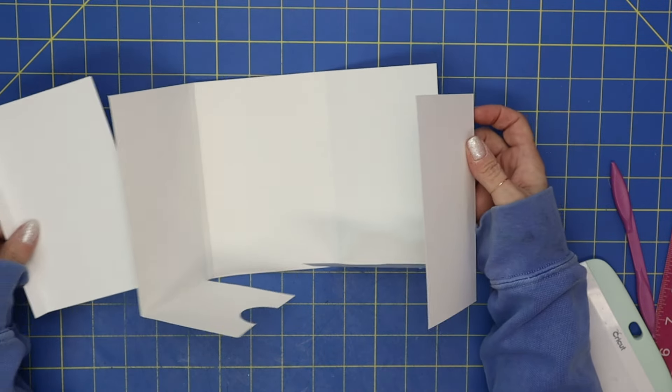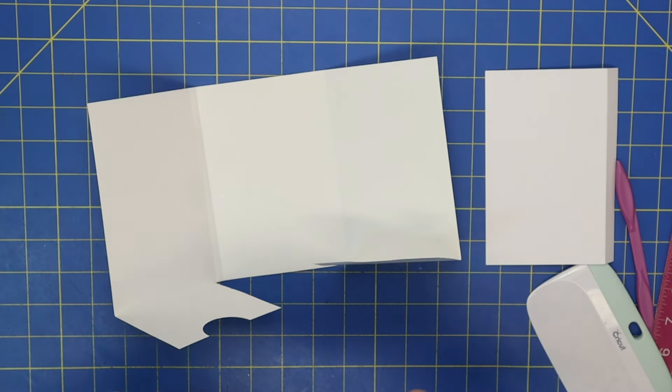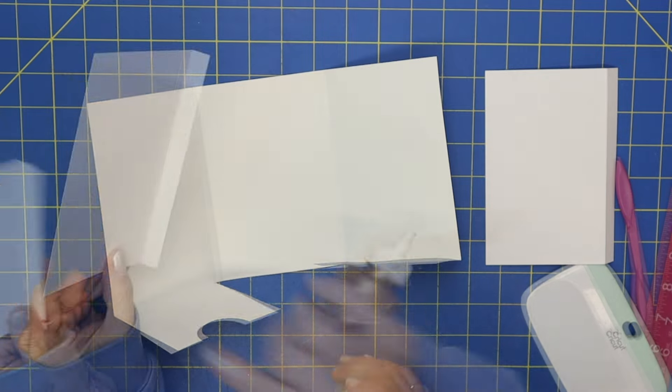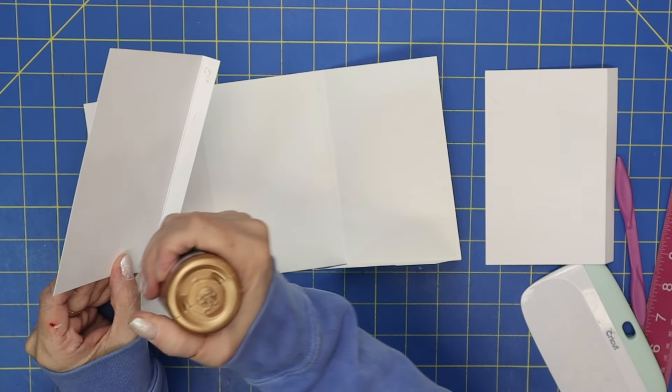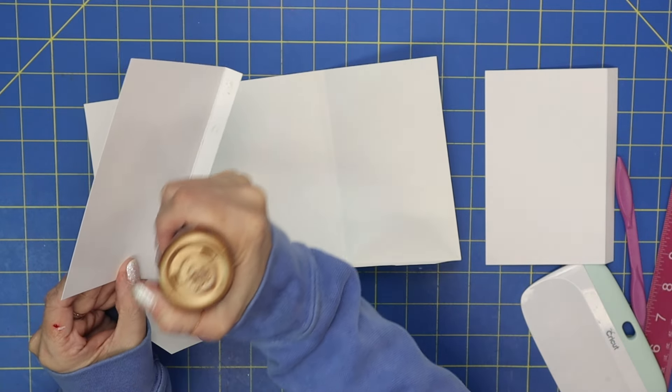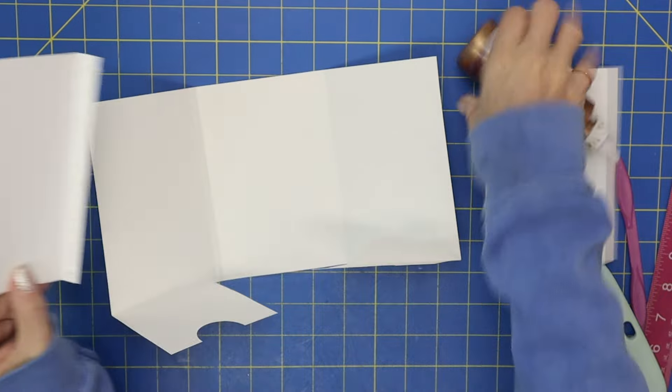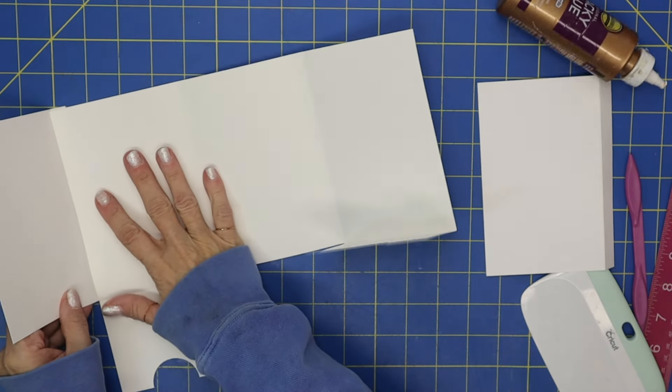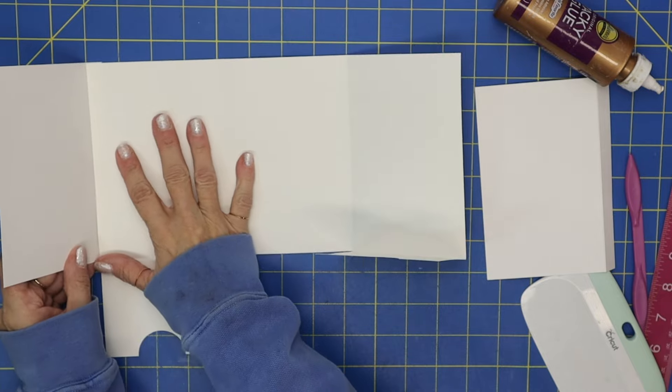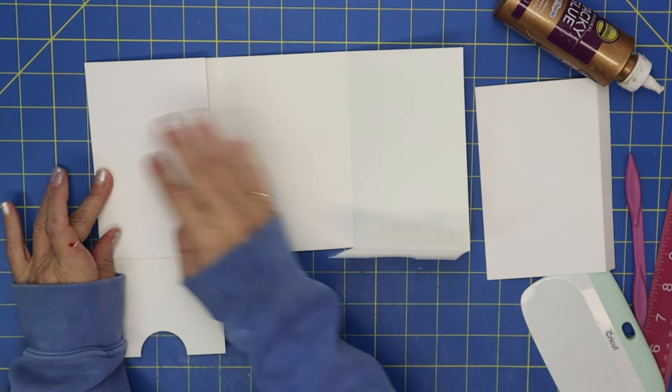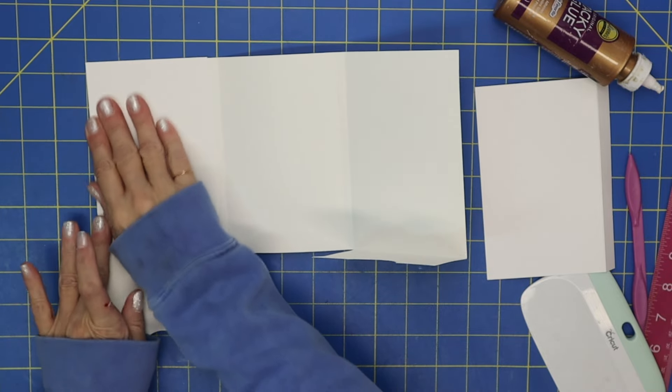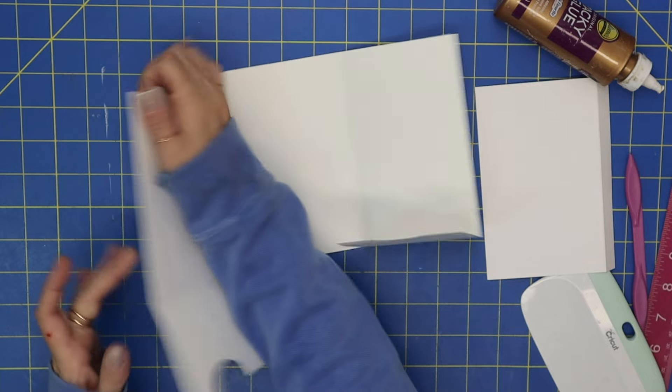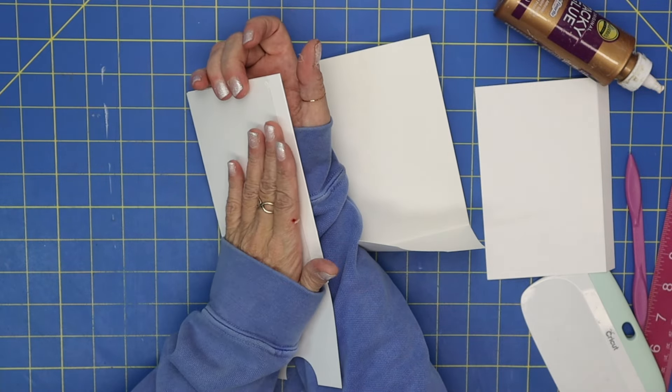This is going to be the tab that we will use to hook our side flip-outs to the album. So bring in some glue. Okay, and you just want to put glue right here on the inside of that tab, and then this is going to just lay down.